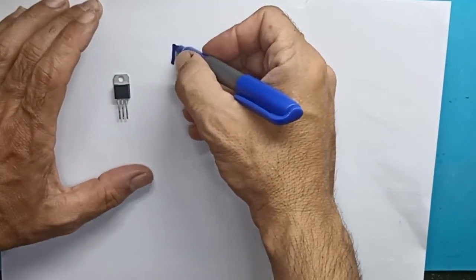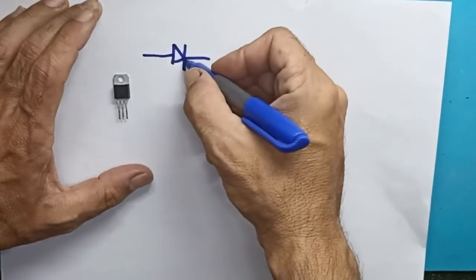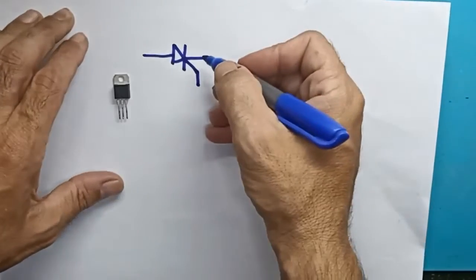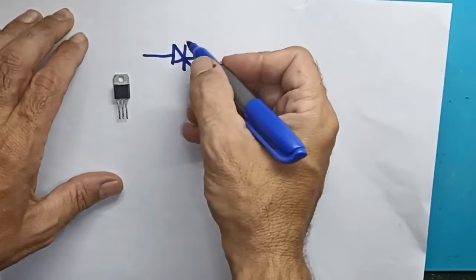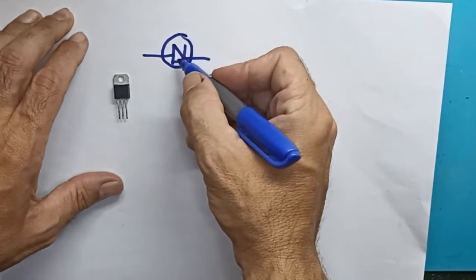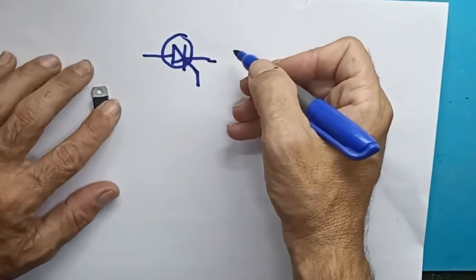So we have a diode here, which however, to conduct also needs a third command, a third little leg. When a pulse is applied to it, this diode will start conducting. In other words, in order for current to flow through it, we must first give a pulse to the third leg.